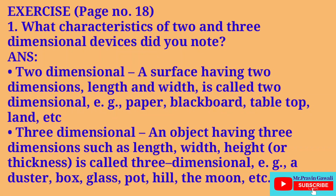Dear students, now we shall study the exercise given on page number 18 of the textbook of 6th standard Geography. First, what characteristics of 2 and 3 dimensional devices did you note? Answer: 2 dimensional — a surface having 2 dimensions, length and width, is called 2 dimensional. For example, paper, blackboard, table top, land, etc.